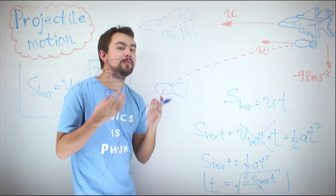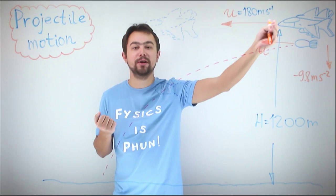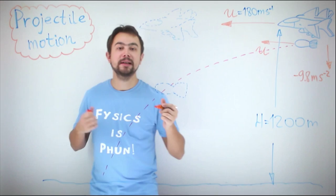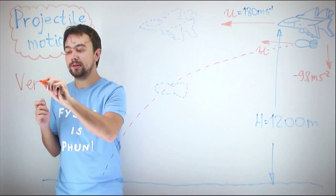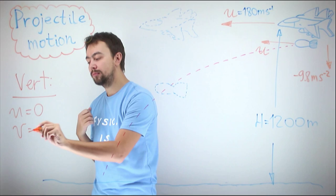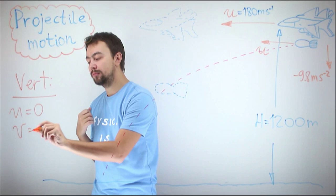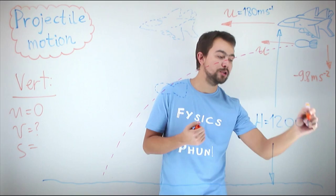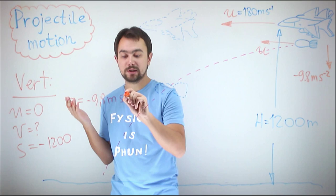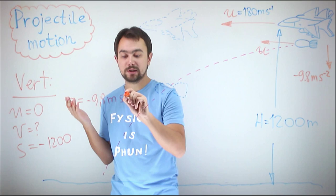Let's introduce some numbers. The initial velocity of the airplane is 180 meters per second, and the altitude is 1200 meters. Considering the vertical motion of the bomb: initial vertical velocity is zero, final velocity unknown, displacement is minus 1200 meters (negative because the bomb moves downward), acceleration is minus 9.8 meters per second squared, and time is what we need to find.